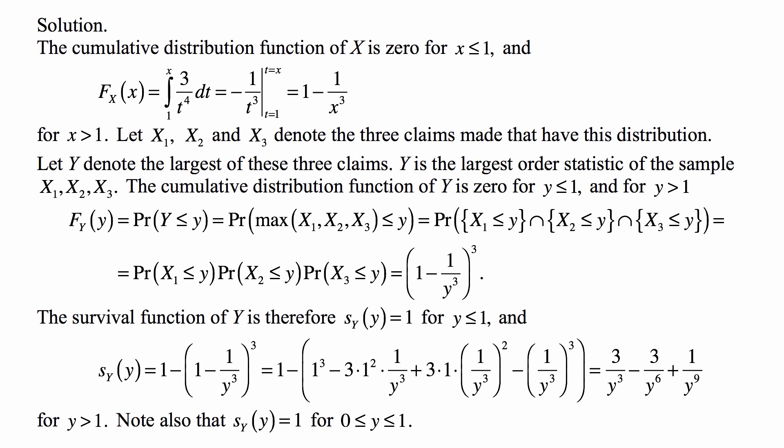Let us write X1, X2, X3 for the three claims, which we know have this distribution, and let us write Y for the largest of these claims. Y is the largest order statistic of the sample X1, X2, X3 — the largest order statistic for a random sample from this probability distribution.